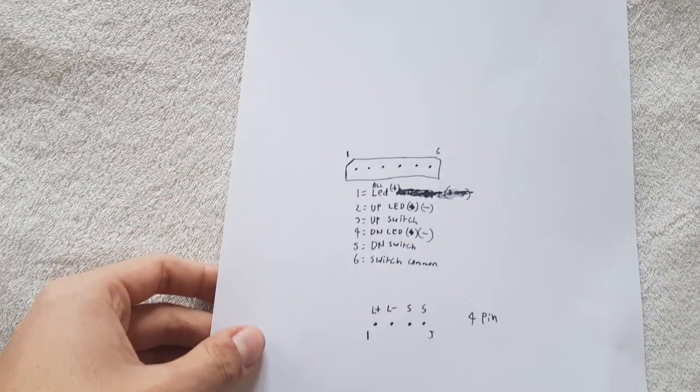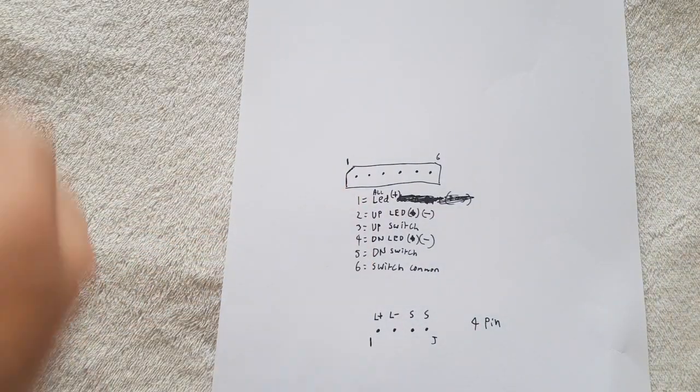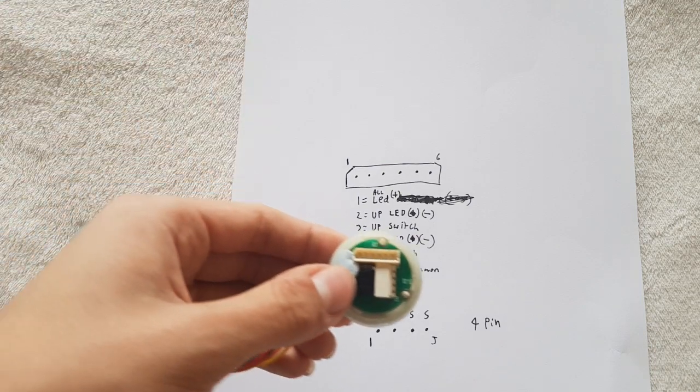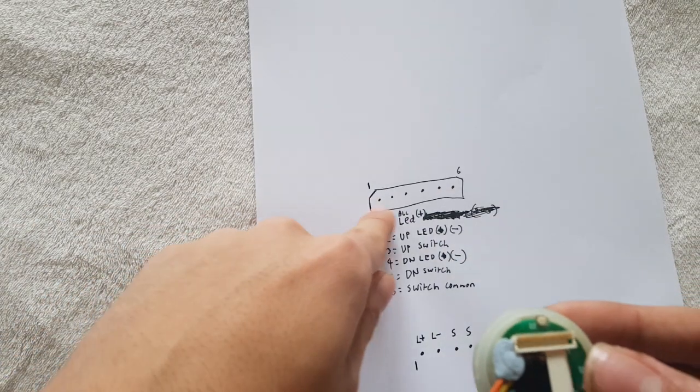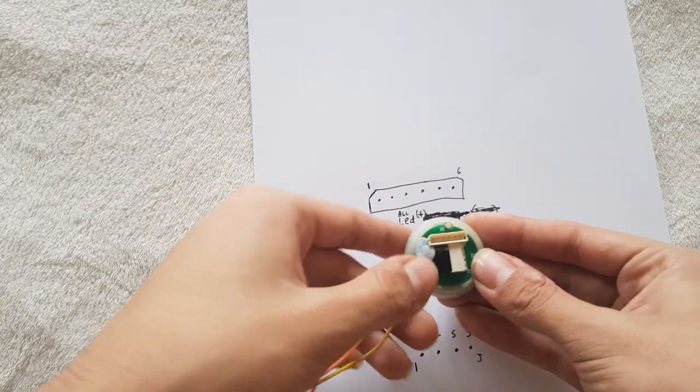This is a video on wiring cone buttons. Here we have just a standard cone button. These are the connectors, and that's the equivalent on a bit of paper.